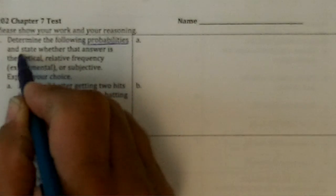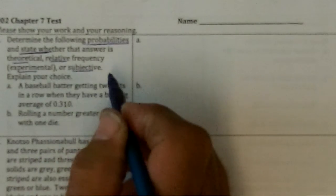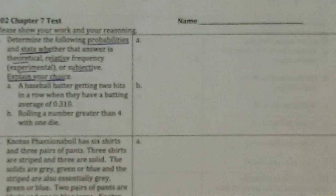First of all, read the question carefully. Determine the following probabilities. So we have to do a probability. State whether the answer is theoretical, relative, or subjective. Then explain why you chose whichever one you did. So there's three things you got to do.